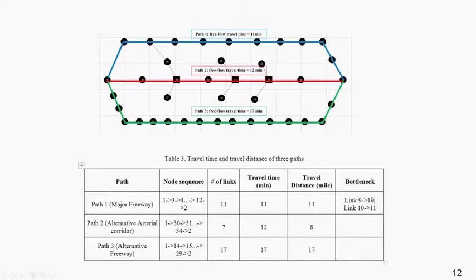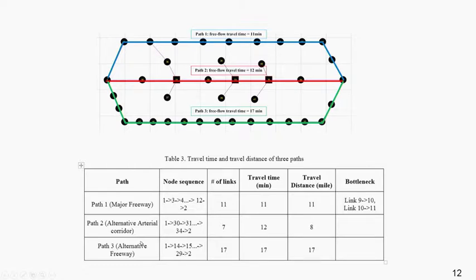For the free flow travel time across three corridors: path one is 11 minutes — this is the major freeway. Path two is 12 minutes — the alternative arterial corridor. Path three is 17 minutes — the alternative freeway with a different capacity setup.